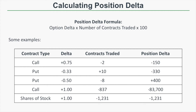Now let's look at shares of stock. One share of stock has a delta of plus one, meaning if the stock price increases by $1, your profit is $1, and if it falls by $1, you lose $1. So let's say we short 1,231 shares of stock — our position delta will be negative 1,231. If the stock price increases by $1, we're going to lose $1 per share, and since we're short 1,231 shares, we lose $1,231. That negative position delta tells us we make money when the stock price falls and lose money when it increases.